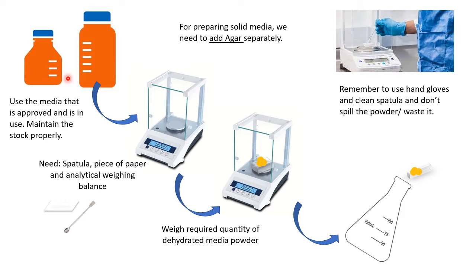In pharma industries, it is compulsory to maintain stock records in log books — noting how much media powder was used, for example for MacConkey broth. You must make entries for agar or any dehydrated media powder used, subtract the amount used, and record how much powder remains in the bottle. At college level, stock maintenance of media powder may not be required, but log books for analytical weighing balances or autoclaves are typically maintained. Use only approved media that is currently in use.